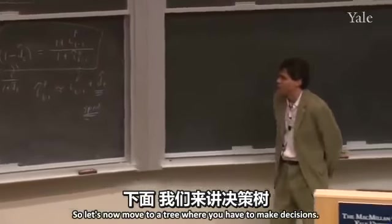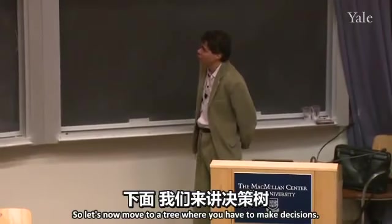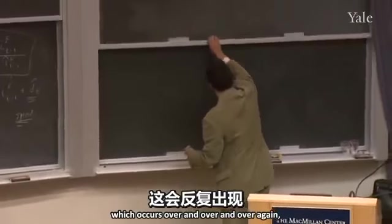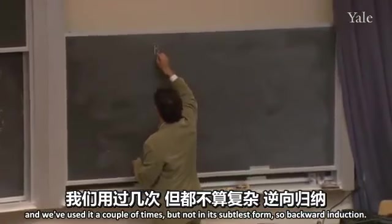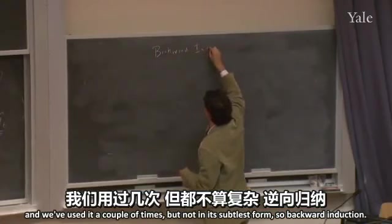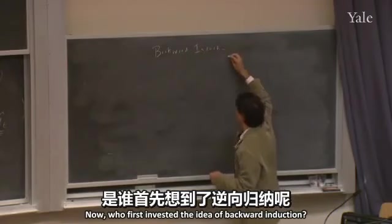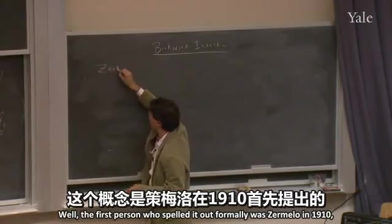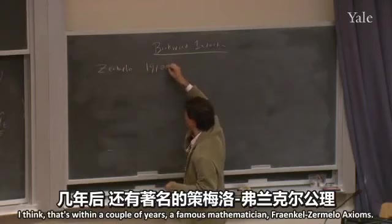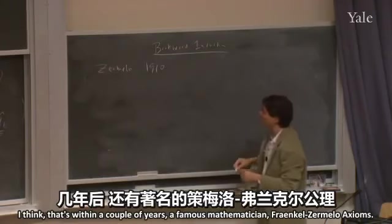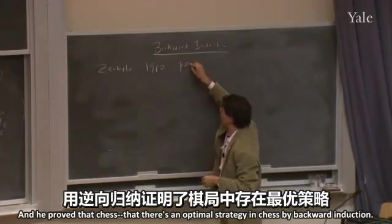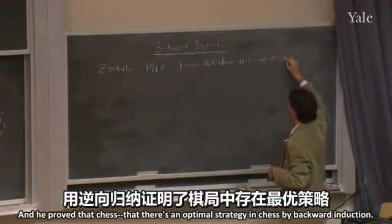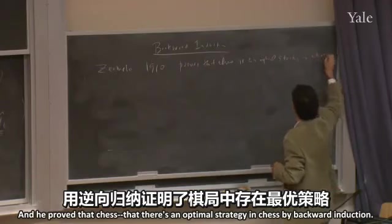Let's now move to a tree where you have to make decisions. I'm going to describe the method of backward induction, which occurs over and over again. We've used it a couple of times but not in its subtlest form. Now, who first invented the idea of backward induction? The first person who spelled it out formally was Zermelo — around 1910 — a famous mathematician. He proved that there is an optimal strategy in chess by backward induction.